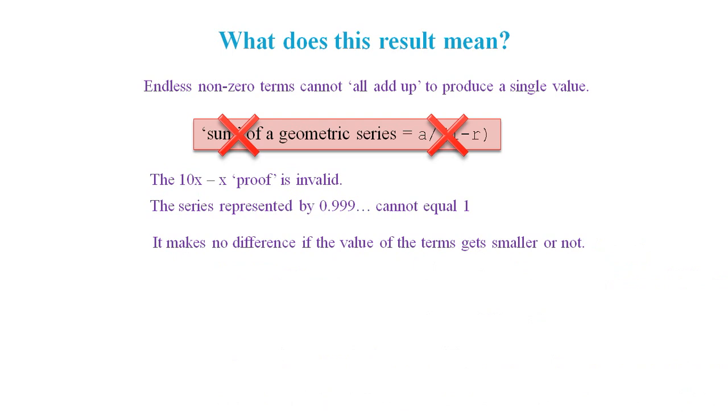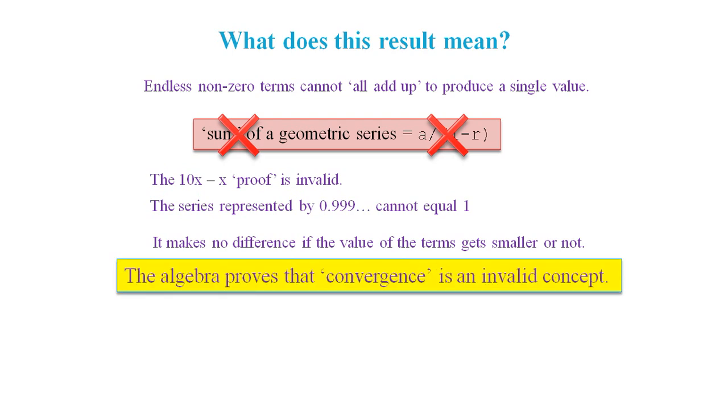And it doesn't matter if the value of the terms gets smaller, bigger, flips between positive and negative values, or whatever. They cannot converge to a constant value. The algebra shows us that the concept of convergence is nothing more than self-delusion.